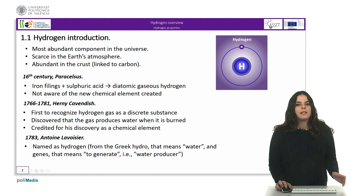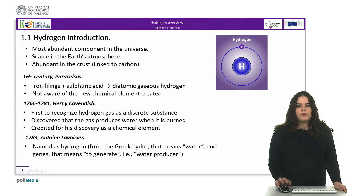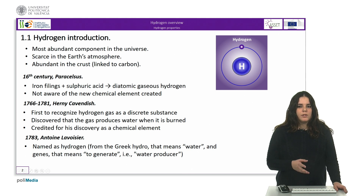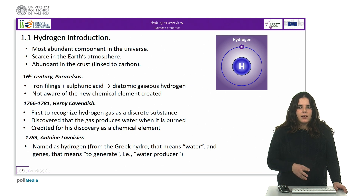In 1783, Antoine Lavoisier gave to the element the name of hydrogen. The name comes from the Greek hydro, meaning water, and genes, meaning to generate — that is to say, water producer.